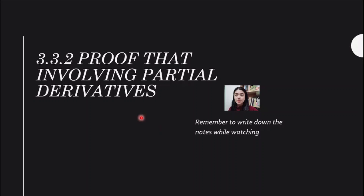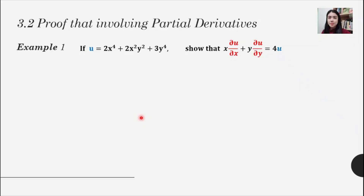This is the proof involving partial derivatives. For example, you are given a function u and you have to show that x(del u/del x) + y(del u/del y) equals 4u. The first thing you have to do is find the first order partial derivatives. We begin with del u/del x first.